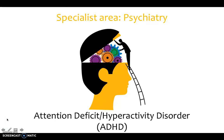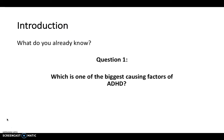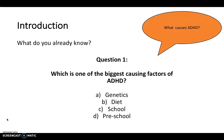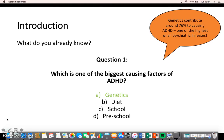Welcome to this video on attention deficit hyperactivity disorder, ADHD, in the specialist theme of psychiatry. For the introduction, a few questions to test your knowledge. Which is the biggest causing factor of ADHD — is it A) genetics, B) diet, C) school, or D) preschool? The answer is A) genetics, which contributes around 76% to ADHD — one of the highest of all psychiatric illnesses.